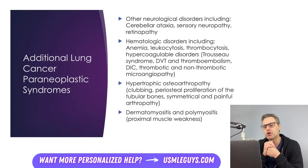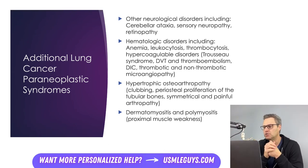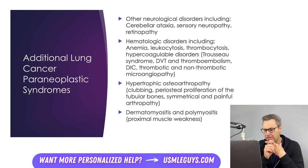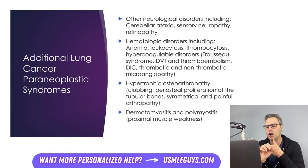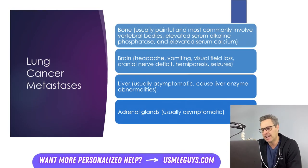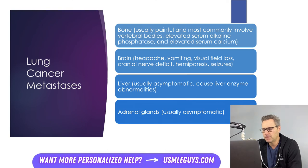More general paraneoplastic syndromes not strongly assigned to one type of lung cancer include neurologic disorders like cerebellar ataxia, sensory neuropathy, retinopathy, and other immune-mediated neurological symptoms. Hematologic conditions should also be considered, including anemia and disorders of hypercoagulability. Hypertrophic osteoarthropathy is another paraneoplastic syndrome recognized by clubbing, arthropathy, and periosteal proliferation of the tubular bones. Dermatomyositis and polymyositis can also result from some lung cancers. Lung cancer is known to metastasize most commonly to the bones, brain, liver, and adrenals.